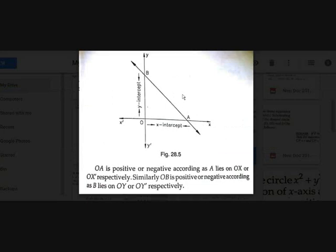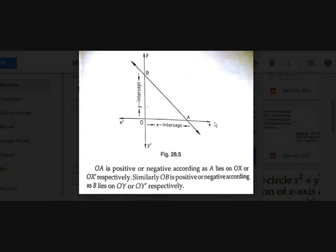If you see this picture, you will understand. Here, this line touches the y-axis at b, so ob is the y-intercept, and it touches the x-axis at oa, so that is the x-intercept. If oa is on the ox-negative side it will be negative; here it is on the ox-positive side, so it is positive. The same goes with the y-intercept.